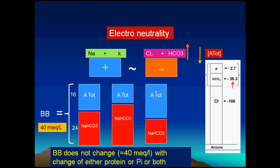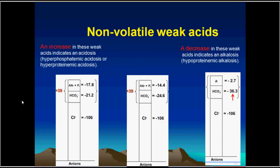On the reverse, hyperalbuminemia or hyperphosphatemia will be associated with a compensatory decrease in bicarbonate. These negative charges always sum to 40. Increase in one will be associated with decrease in the other. This is electroneutrality, and we should take care of this while interpreting the ABG.